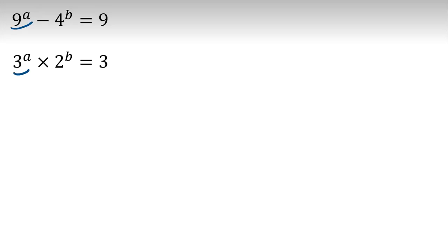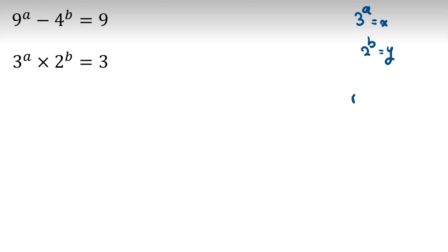Because we are working with 3 to the A, 9 to the A, 2 to the B, and 4 to the B, I call 3 to the A equal to X and 2 to the B equal to Y. Also, we know that R to the M to the N equals R to the MN, which equals R to the N to the M.